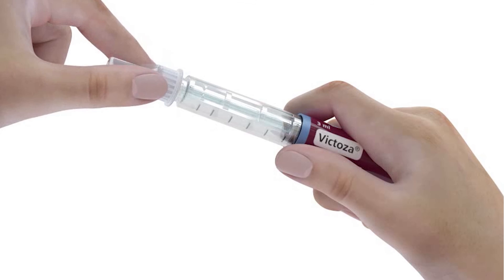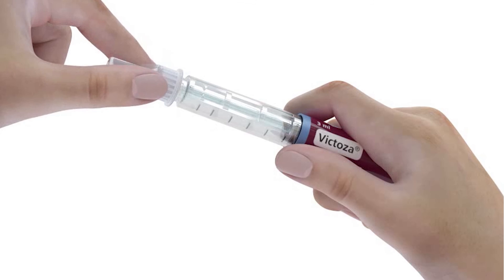Remove the needle after every injection to ensure continuous, painless and accurate dosing. Then put the pen cap back on and store Victoza pen at room temperature until your next injection.